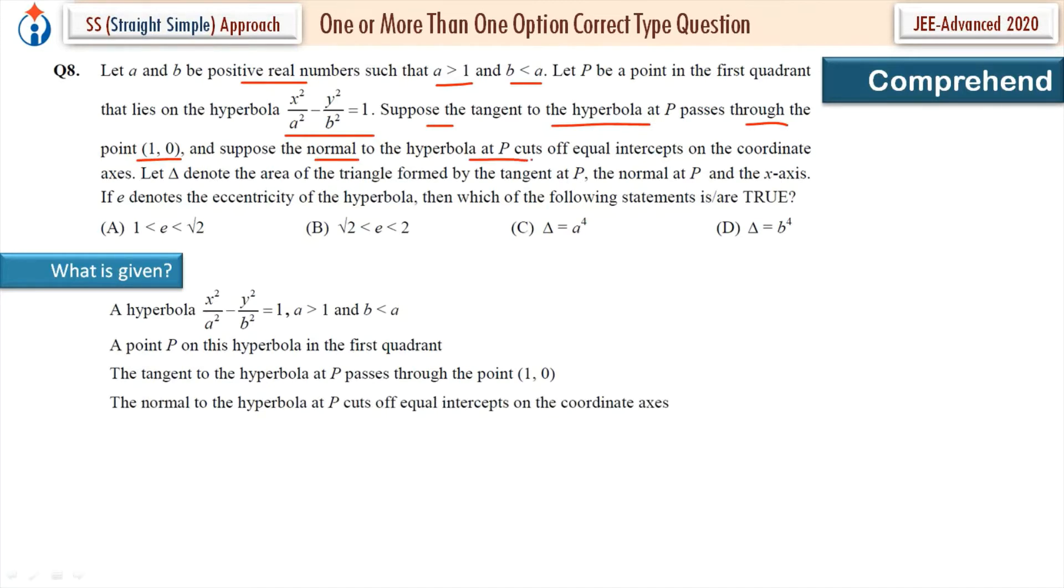The normal to the hyperbola at P cuts off equal intercepts on the coordinate axes. So normal to the hyperbola at P cuts off equal intercepts on the coordinate axes. Let delta denote the area of triangle formed by the tangent at P, normal at P and the x-axis.